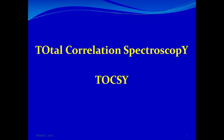What if protons are showing correlations with protons that are more than three bonds away from each other? This can be done with another two-dimensional NMR technique which we call Total Correlation Spectroscopy, abbreviated as TOCSY. This is the technique we are going to discuss today.